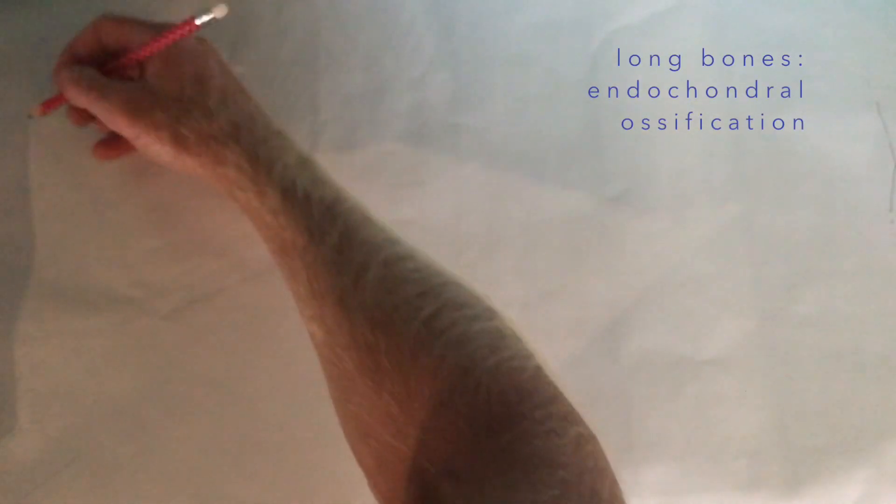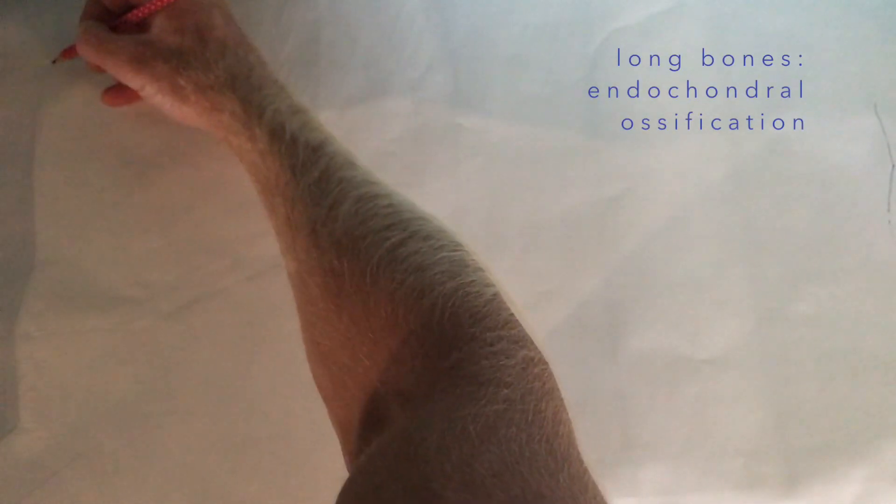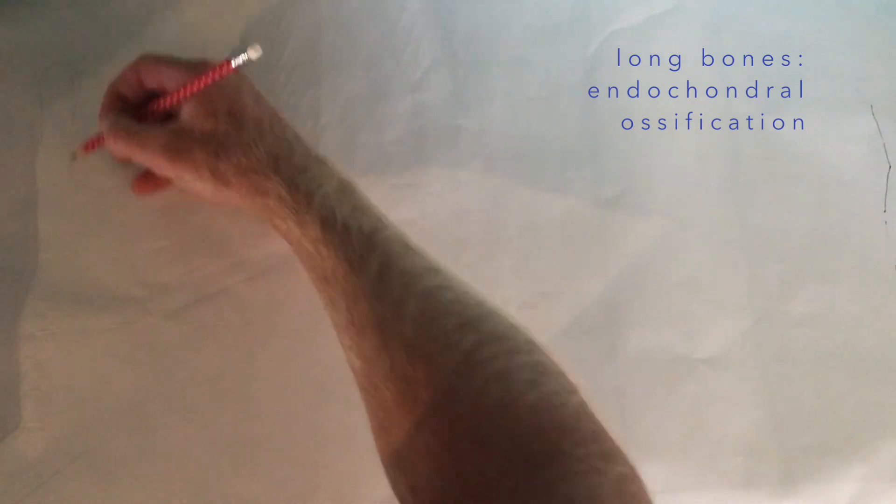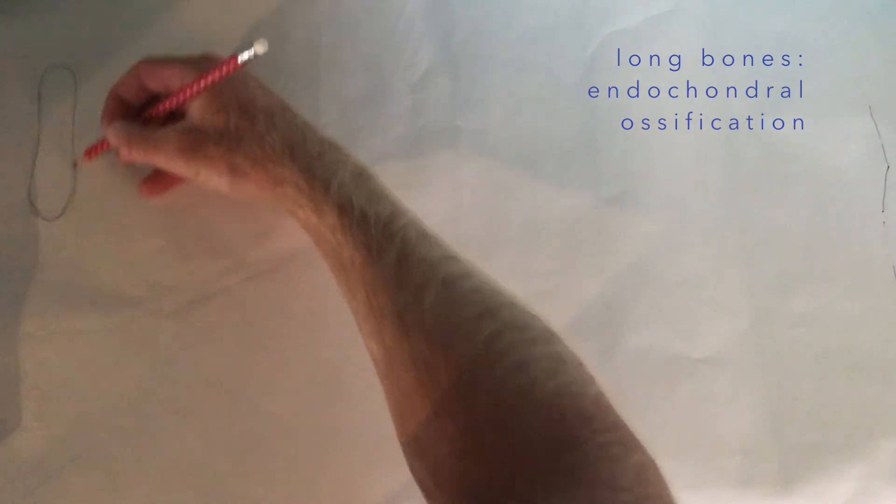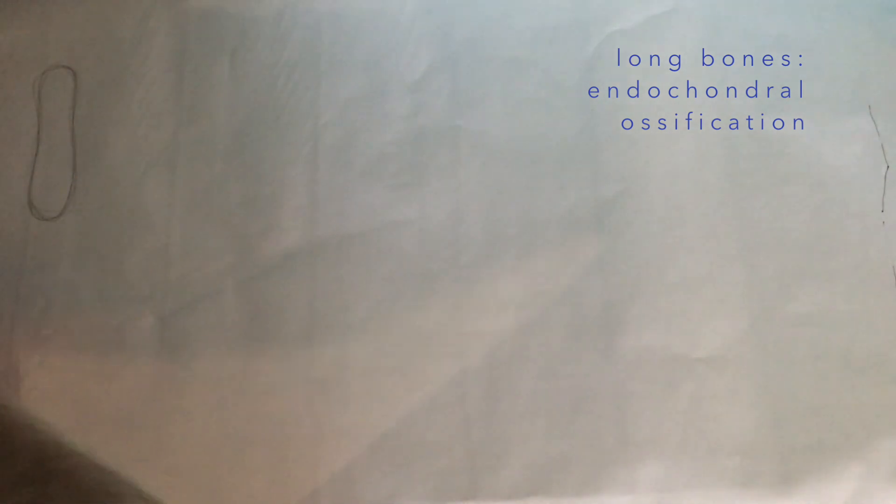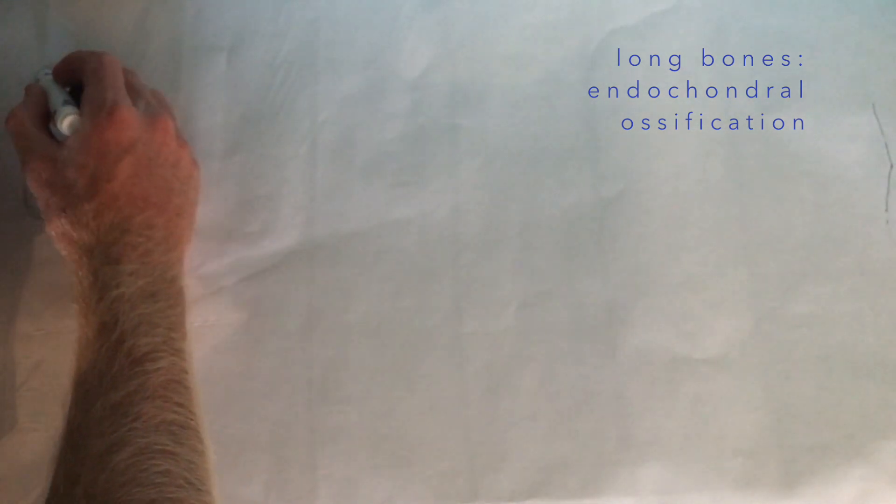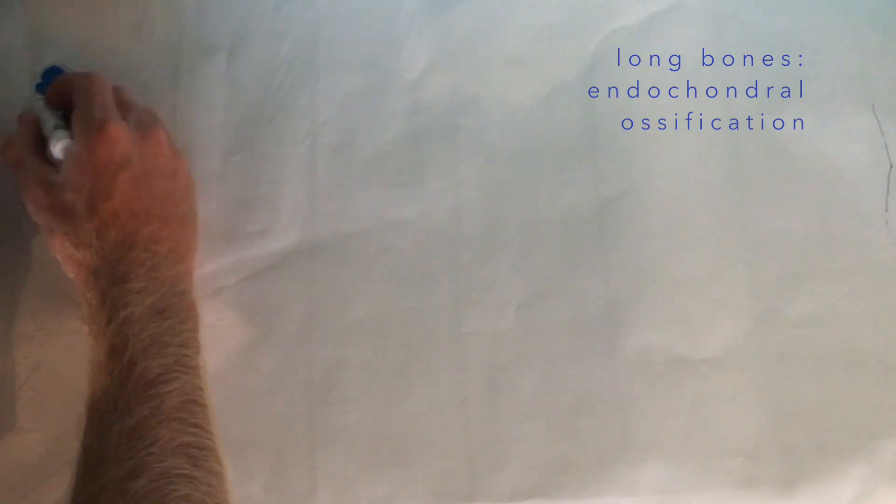In long bones like the humerus and the femur, a process called endochondral ossification occurs. The gist of this is that a template is formed first, and that template is made of hyaline cartilage. This occurs before birth in the fetus. A template of hyaline cartilage occurs early in fetal development, within the first couple of weeks.